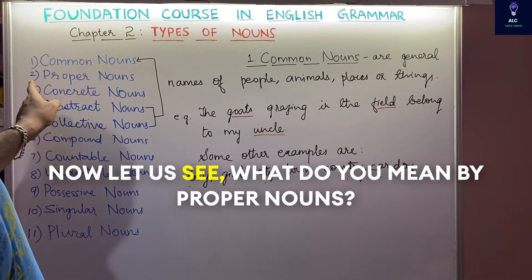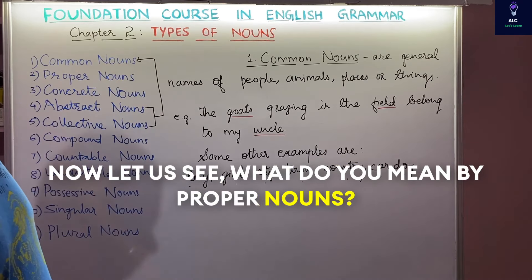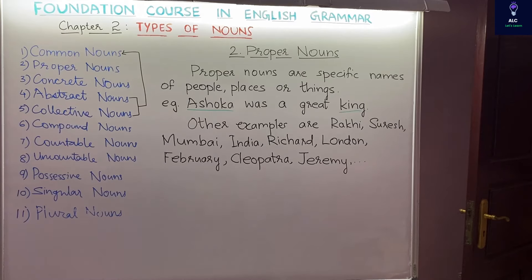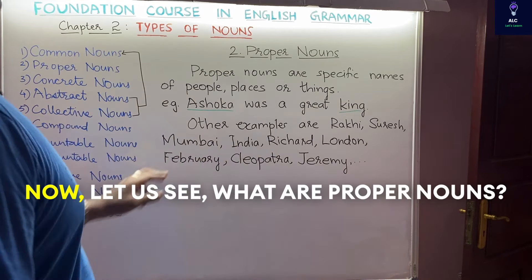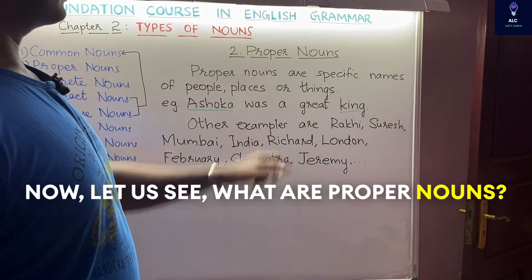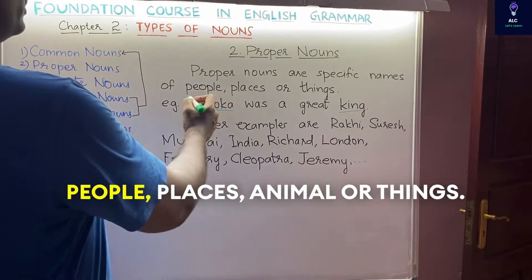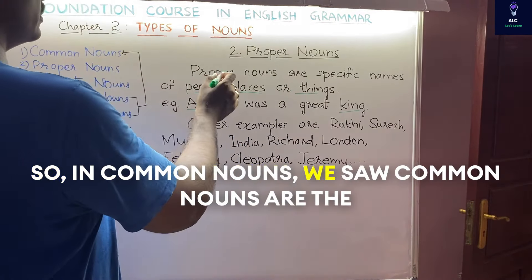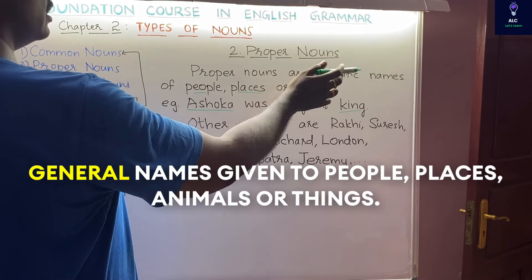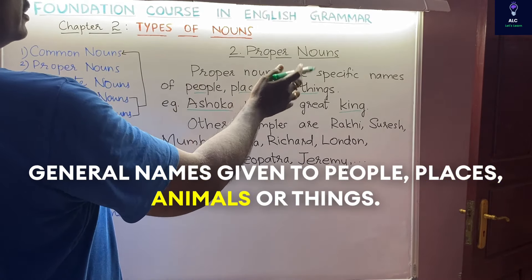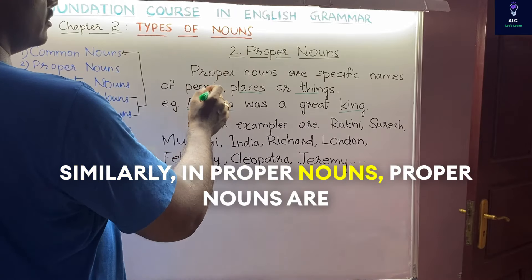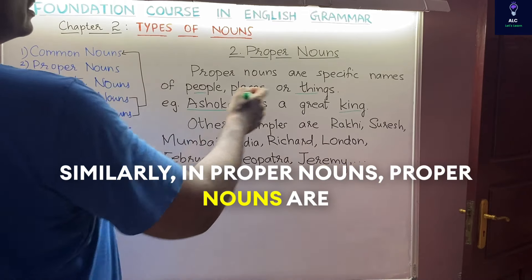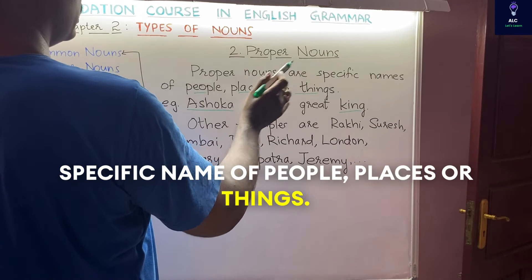Now let us see what we mean by proper nouns. Proper nouns are specific names of people, places, animals, or things. In common nouns we saw general names; similarly, proper nouns are the specific names of people, places, or things.